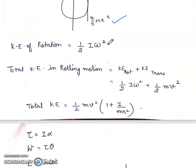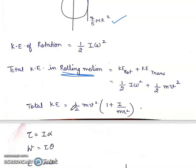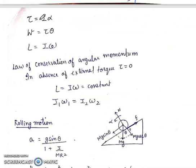Next is kinetic energy of rotation: it is half I·omega². Translational kinetic energy is half M·v². In rolling motion, both rotation and translation occur, so total kinetic energy equals half I·omega² plus half M·v², which can be written as half M·v² into (1 plus I by MR²). Other important formulas: force equals M·a, torque equals I·alpha, work done equals tau·theta, angular momentum L equals I·omega. Law of conservation of angular momentum: in the absence of external torque, angular momentum remains conserved, so I1·omega1 equals I2·omega2.